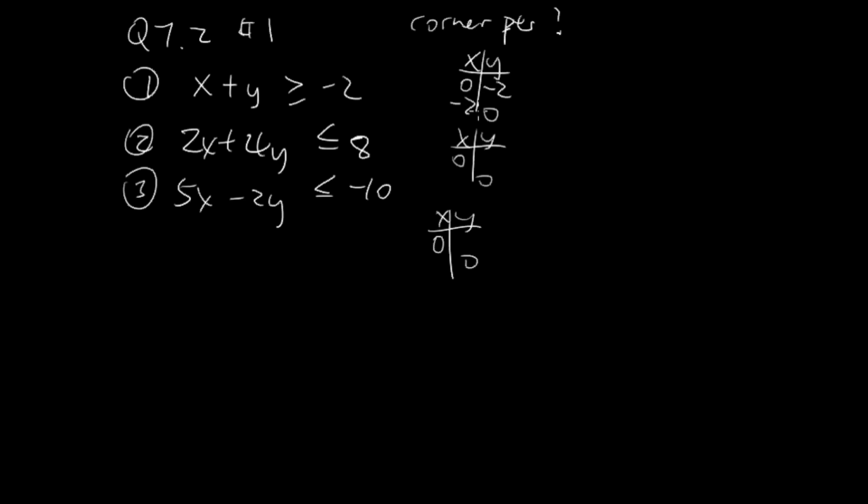When x is 0, y is negative 2. When y is 0, x is negative 2. Here, when x is 0, y is 2. When y is 0, x is 4. Here, when x is 0, y is 5. When y is 0, x is negative 2.